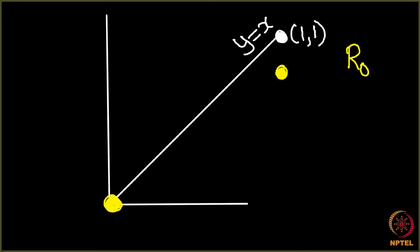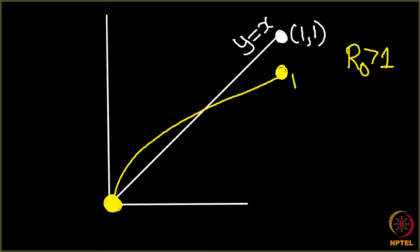Let's say the value of R0 is greater than 1. When the value of R0 is greater than 1, we know that our function's slope is going to be greater than 1. This line y equals x corresponds to slope equals 1. So slope greater than 1 will go something like this. So our function looks something like this.